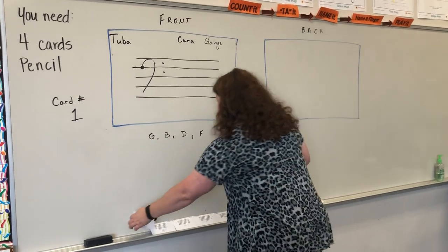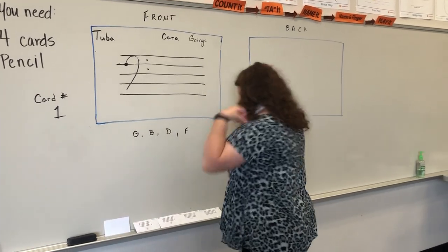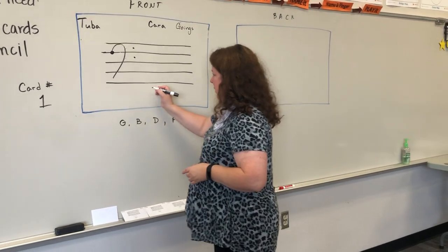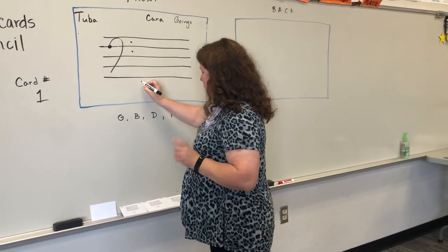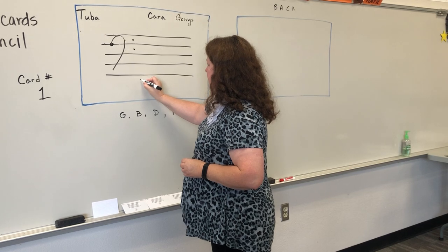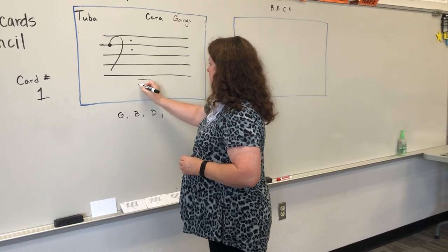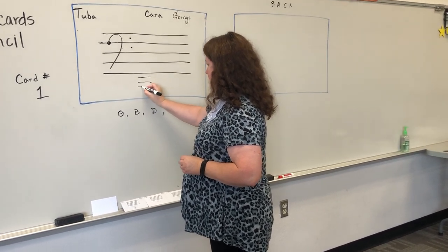So, I am going to begin. We're going to add some ledger lines here. So, you're going to need to add three lines to get us down in tuba register. One, two, three.